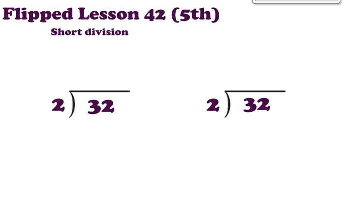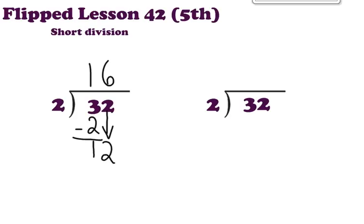2 goes into 3 one time. 1 times 2 is 2 and then we subtract. 3 minus 2 is 1. Then the next step is bringing down the 2. Now 2 goes into 12 six times. 6 times 2 is 12. Subtract and we get a 0 — no remainder. So this is our example of long division.